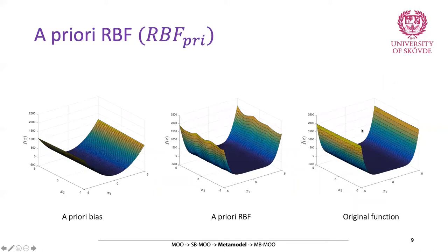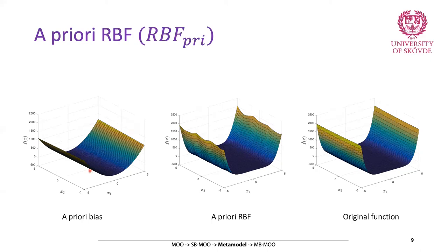Here you see the original test function. You want to create a metamodel that represents this function. If you use the original RBF, the surface created looks quite different. But with our approach, the approximation surface — the metamodel — is very much more similar to the original function. RBF-pre was one of the methods we proposed, and comparison studies showed it performed very well compared to other well-known methods.